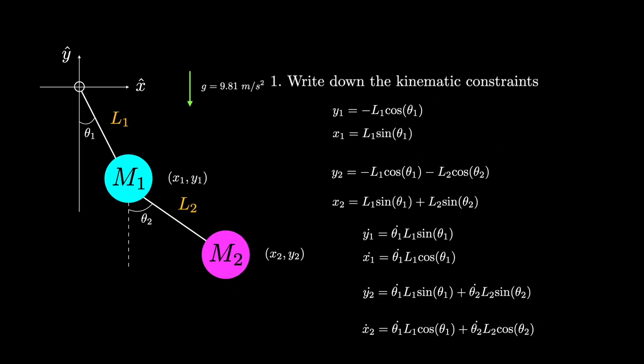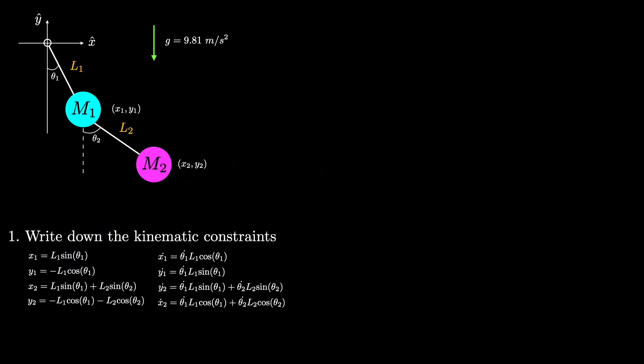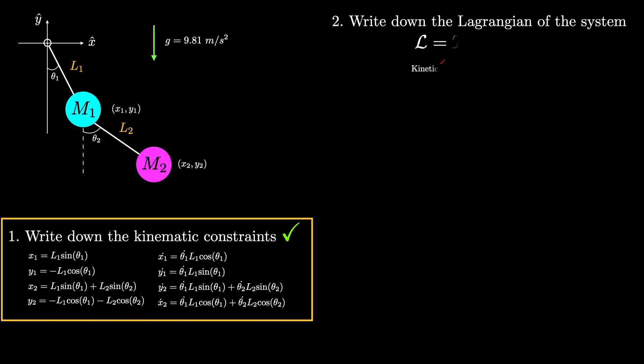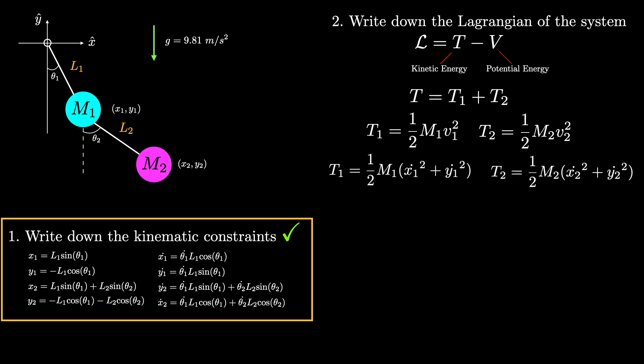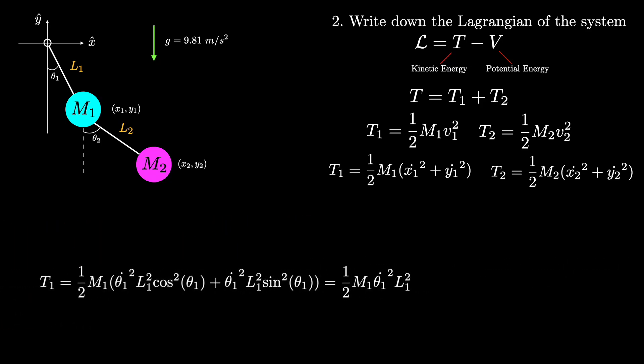Okay, now we can write down the Lagrangian. The kinetic energy of the total system will just be the sum of the kinetic energies of each particle. And of course, kinetic energy is just one half times the mass times the velocity squared. So we can write that down for each particle. And in terms of our coordinate system, it becomes the following. Then, we'll plug in the expressions we found in step one to get this result for the total kinetic energy.